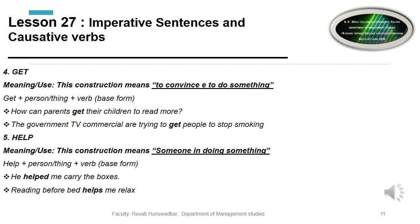The next causative verb is 'get,' which means to convince someone to do something. For example: 'How can parents get their children to read more?' 'The government TV commercials are trying to get people to stop smoking' — they are convincing people not to smoke because it is injurious to health.